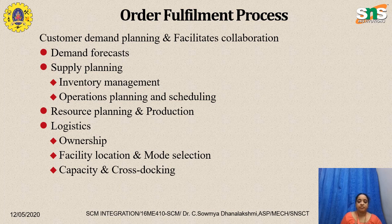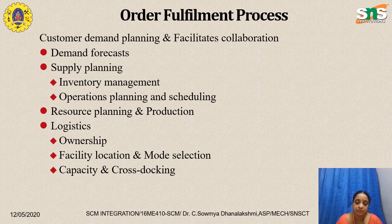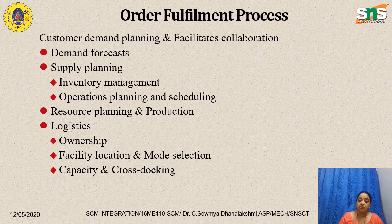The order fulfillment process includes customer demand planning and facilities collaboration. Demand forecasting drives supply planning, and when an industry plans for product supply it must have proper inventory management. Planning and scheduling of entire operations is also essential. Resource planning, production, and logistics — covering ownership, facility location, mode selection, capacity, and cross-docking systems — are key components.